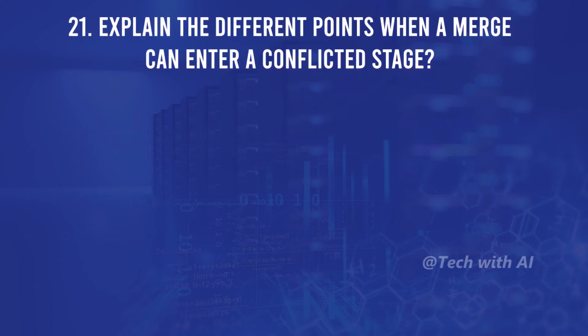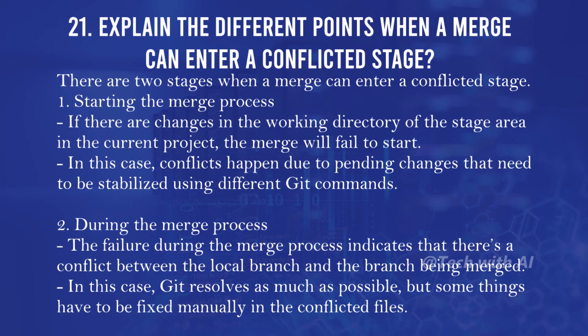Explain the different points when a merge can enter a conflicted stage. There are two stages: first, when starting the merge process — if there are changes in the working directory or staging area of the current project, the merge will fail to start; conflicts here happen due to pending changes that need to be stabilized. Second, during the merge process — failure indicates a conflict between the local branch and the branch being merged; Git resolves as much as possible but some things have to be fixed manually in the conflicted files.